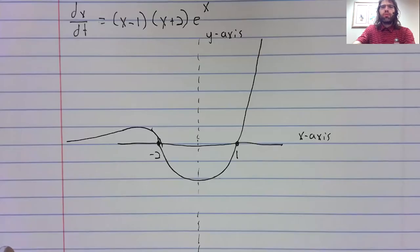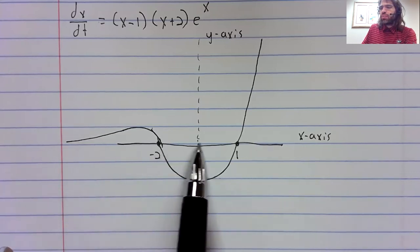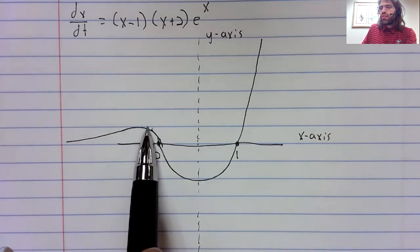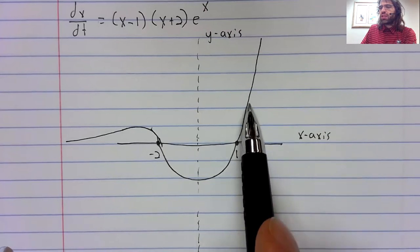And now we perform the exact same analysis as before, except instead of using a sign chart we're using a graph. We go right when this derivative curve is positive.